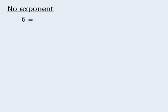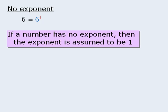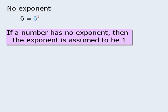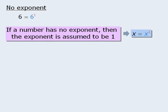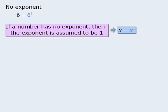In this particular example, 6 can be rewritten as 6 to the power of 1. In fact, if a number does not have an exponent, then the exponent can be assumed to be 1. In other words, x is always equal to x to the power of 1. So all of these numbers can be rewritten using exponential notation.